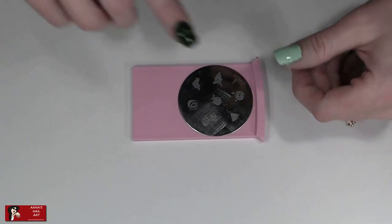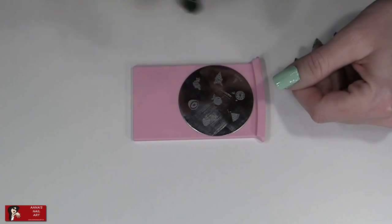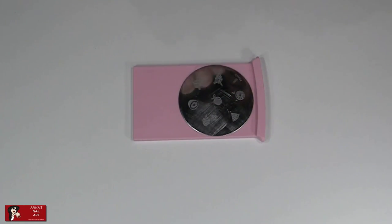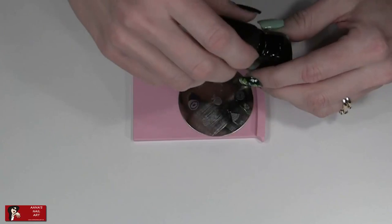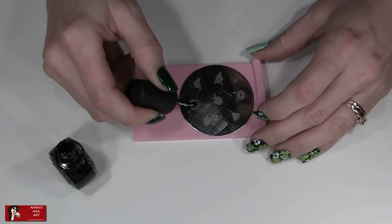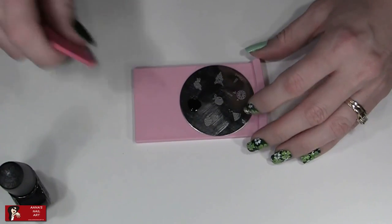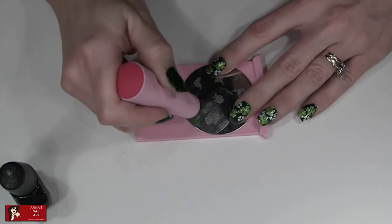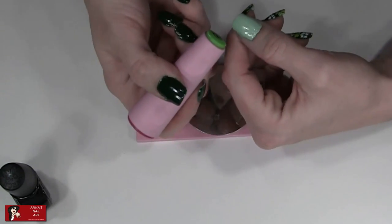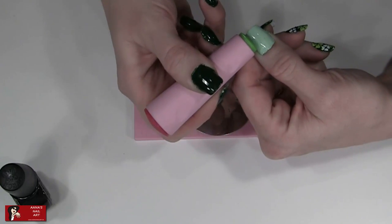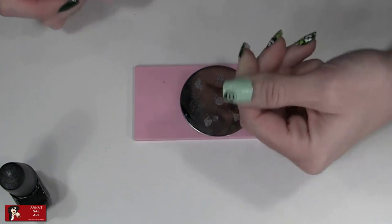So what we're going to do is we're going to put that down in the corner of our nail here and we're going to use our black stamping polish. I'm just going to put the black over top like that and we're going to scrape and I'm just going to place it down the bottom of my nail like that.